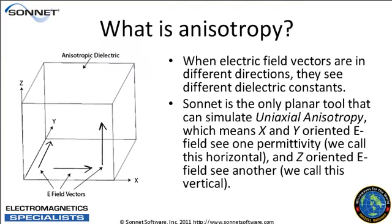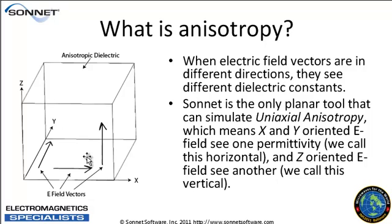So first of all, what is anisotropy? Let's imagine we've got an anisotropic dielectric brick, and we've got three different electric field vectors — one oriented in the y direction, one in the x direction, and one in the z direction. If each one of those were to see a different permittivity, we would call that biaxial anisotropy.